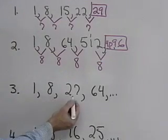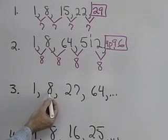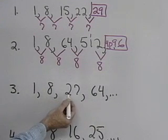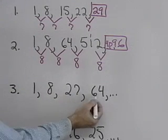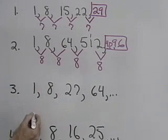Our next one: 1, 8, 27, 64. If I add 7, I get this. If I add 7, I don't get this. Multiply by 8, I get that. Multiply by 8 again, I don't get that. So I'm going to have to look for something else.